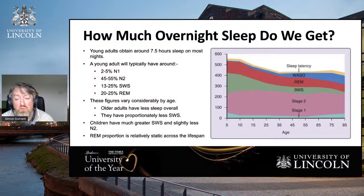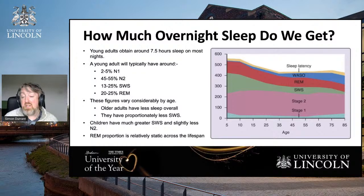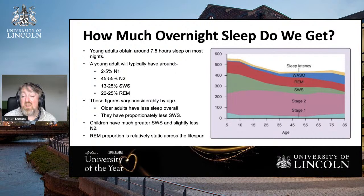You don't lose that much REM sleep even well into your 80s or 90s — you're still getting a reasonable amount. What does drop off substantially from an early age is deep sleep — slow wave sleep. Older adults tend to get much less deep sleep; some estimates suggest up to a third of older adults get almost no deep sleep. It begins to drop off right from the start, stabilizes around age 25, and then begins to drop off more substantially around the age of 60 to 65.